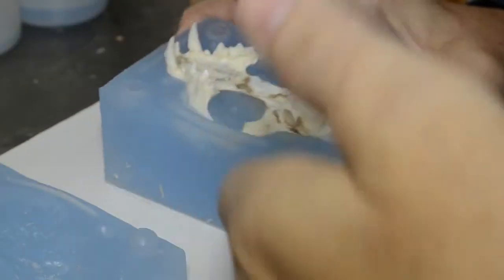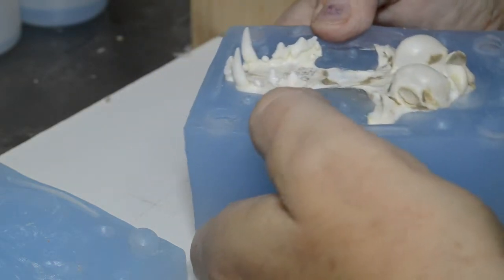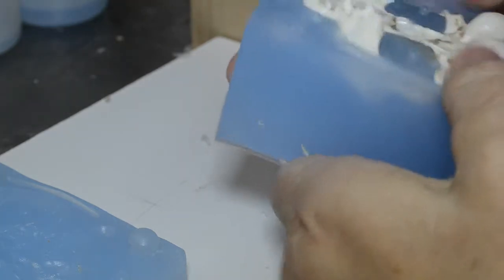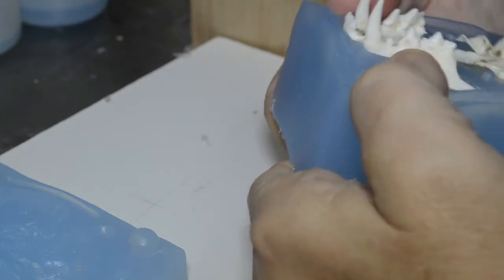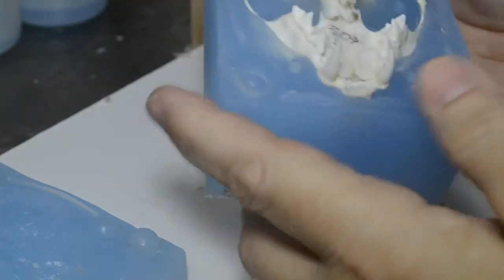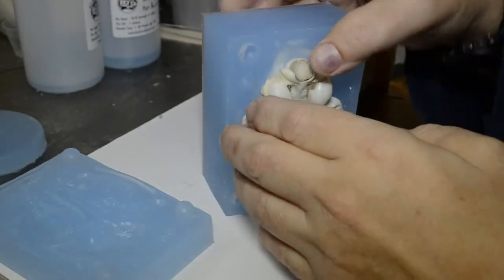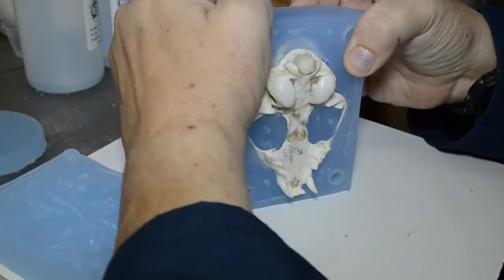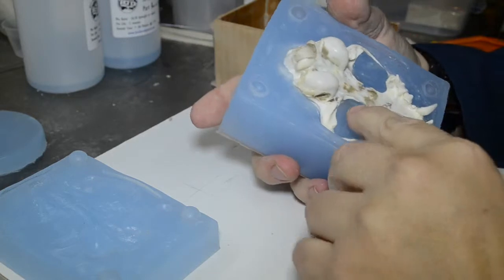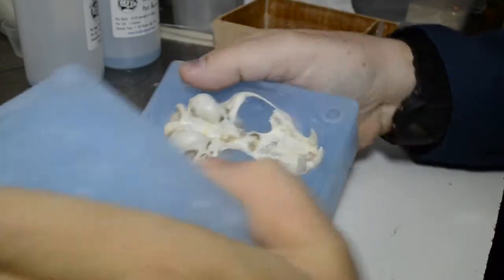Now comes the fun part: getting the main skull out of its container, its mold half. Simply, very slowly and carefully, pry the silicone mold away from the bones. Just like so. It's coming away really, really well, considering what had happened. It's coming away beautifully.